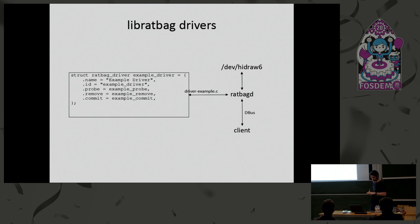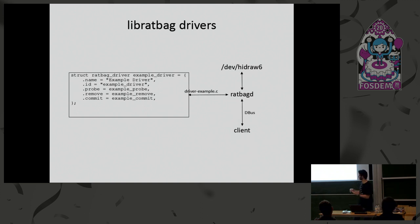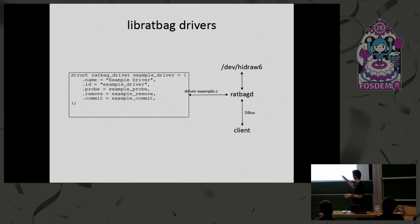To write your own LibratBag driver, you basically create a new file, define some functions, and then define a structure. The structure can vary a bit, but for most cases you want to define a probe method — called the first time you connect the device — a remove method for when you disconnect it, and a commit method that is called every time you update a setting, where you typically just tell the device to be configured in that way.